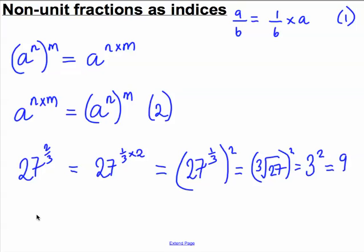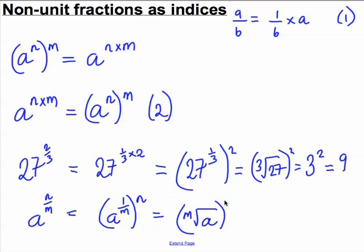In general then, if you take any base number and you raise it to a non-unit fraction N over M, the best way to work this out is to first of all take your base number and work out that raised to the unit fraction 1 over M, and then evaluate that to the power of N. A to the power of 1 over M is simply the Mth root of A, and all of this raise it to the power of N. This is the quickest and easiest way to work out index notation with non-unit fractions. Let's do some examples.